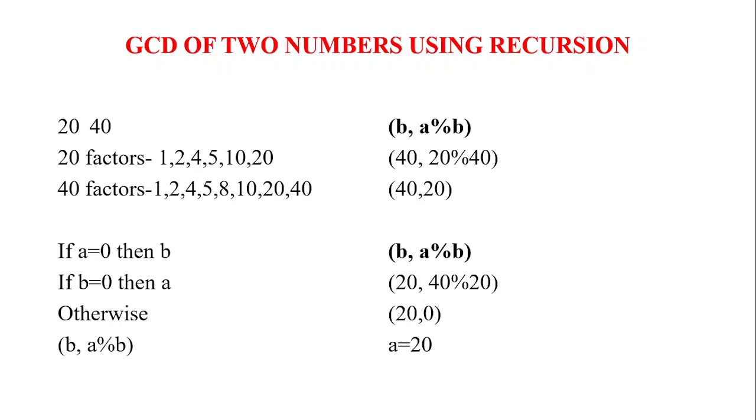Now let us see GCD of 2 numbers using recursion. Now what is GCD? The greatest common divisor of 2 or more numbers is the greatest common factor number that divides them exactly. It is also called the highest common factor. For example the greatest common factor of 15 and 10 is 5 since both the numbers can be divided by 5.